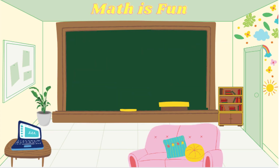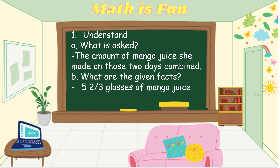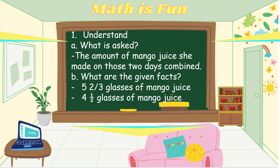To answer our problem, we should follow some steps in solving the word problem. First, we should understand what is asked in the problem — it is asking for the amount of mango juice she made on those 2 days combined. The given facts are: 5 and 2 thirds glasses of mango juice and 4 and 1 half glasses of mango juice.